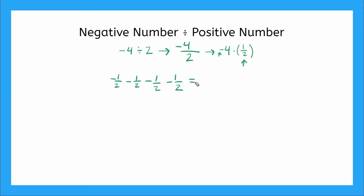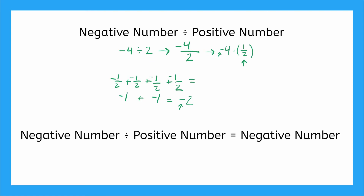Now I can do this arithmetic. I have all negative one half values. Remember, any negative sign here I can read as plus negative. So negative one half plus negative one half gives me negative one, and negative one half plus negative one half gives another negative one. Negative one plus negative one gives me negative two. This shows that dividing a negative number by a positive number gives a negative answer. That's our rule: negative divided by positive equals negative.